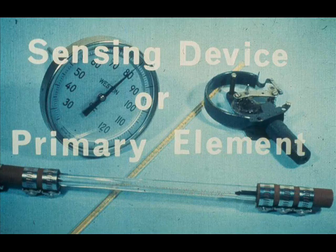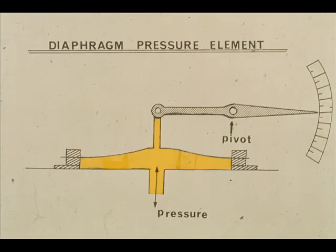In instrumentation, the measuring device is called a sensing device, or a primary element. We discussed pressure sensing devices, pointing out that the simplest pressure sensing device is the flexible diaphragm.